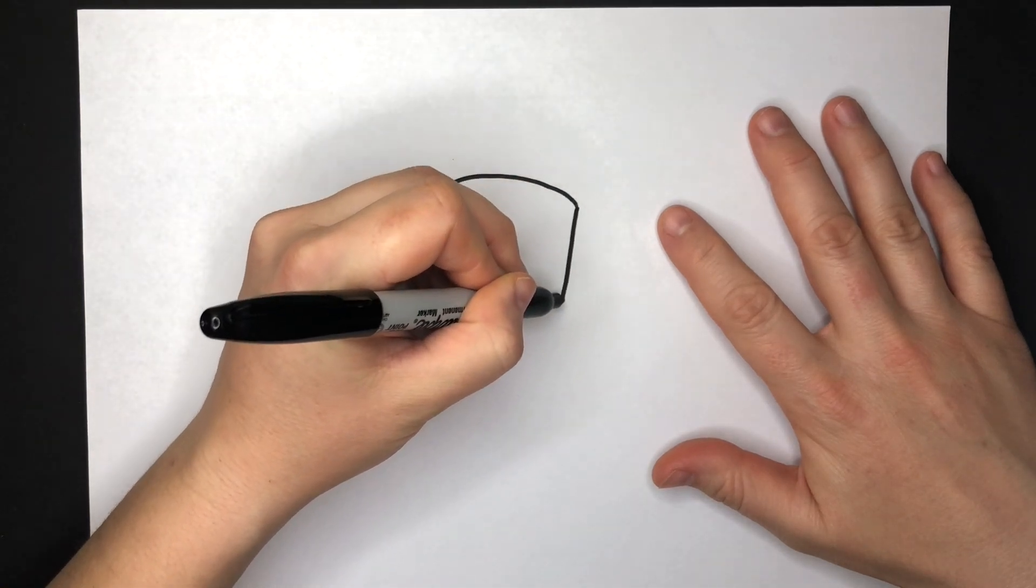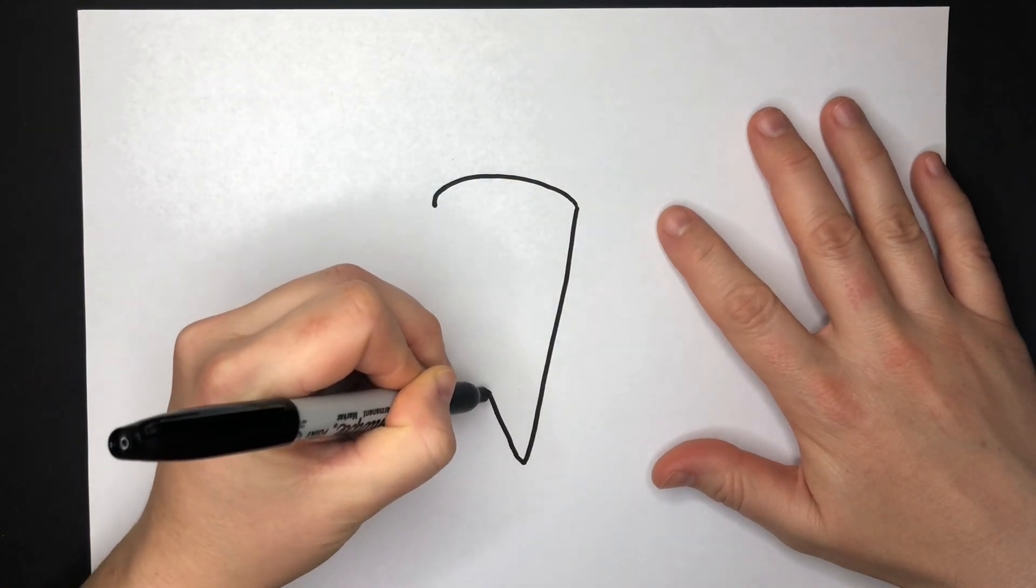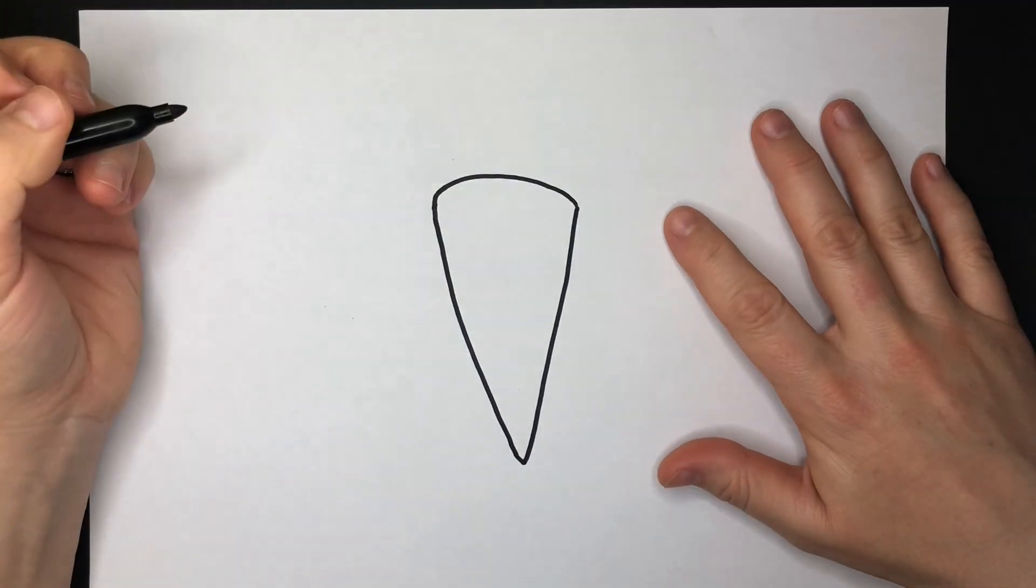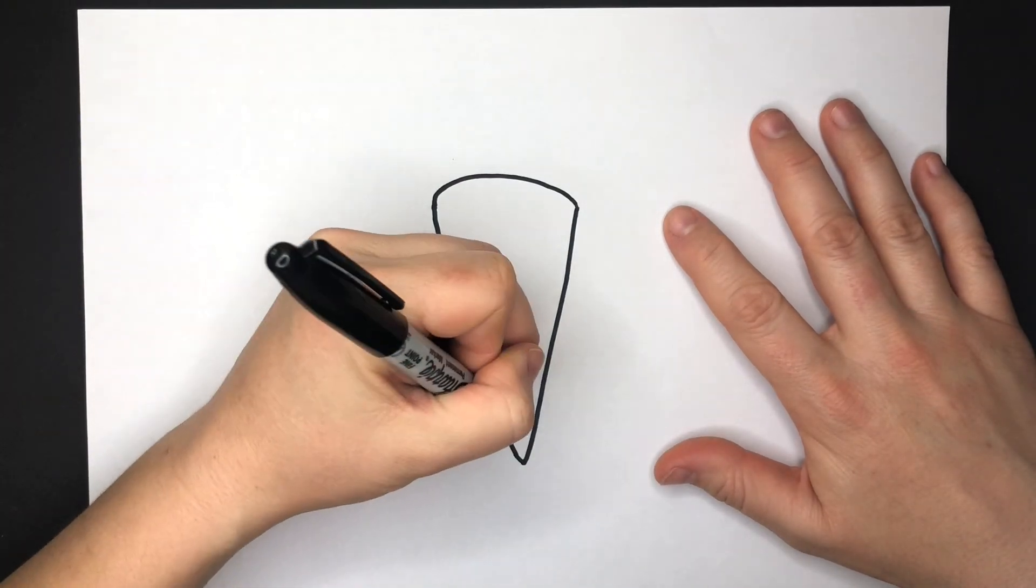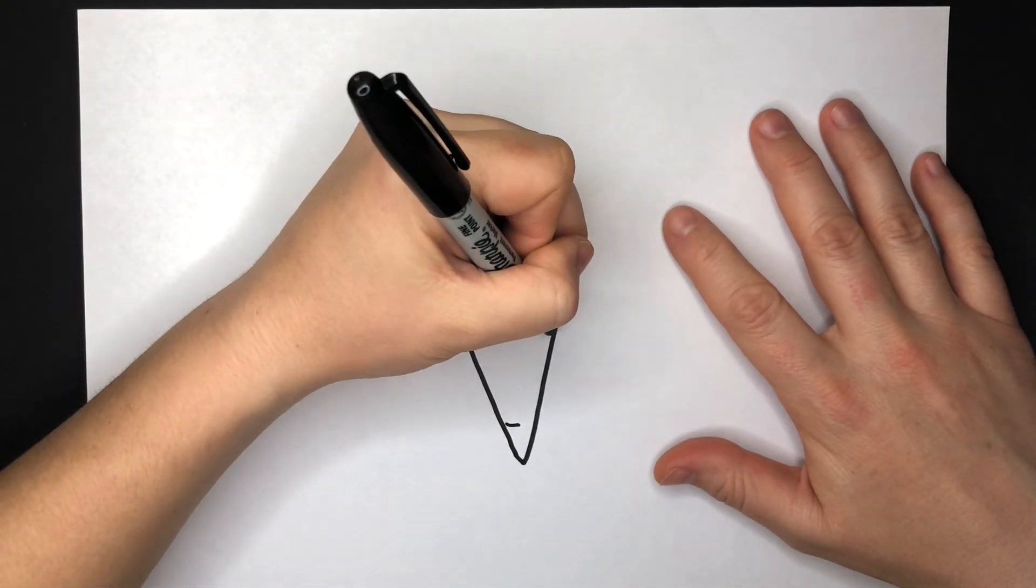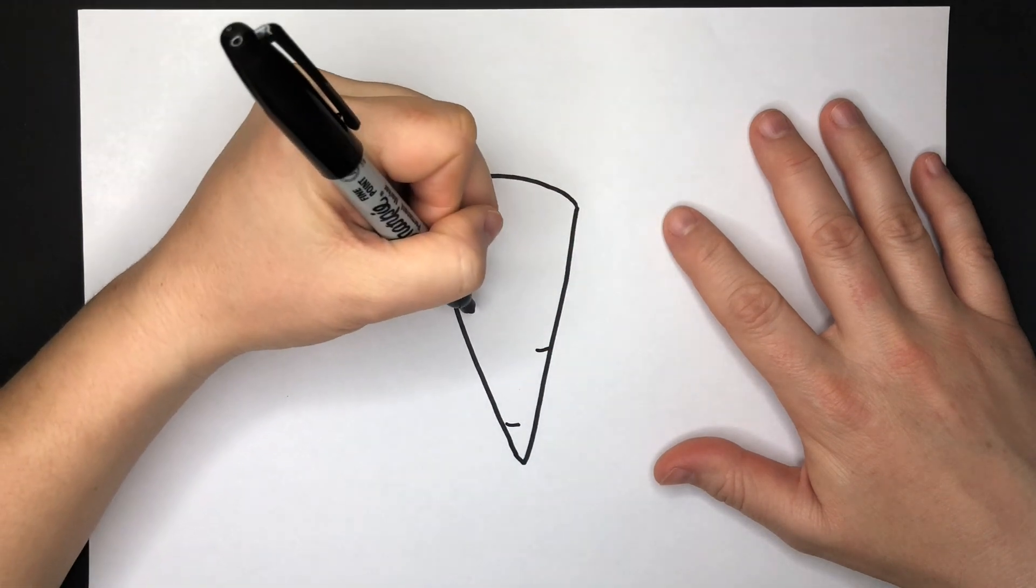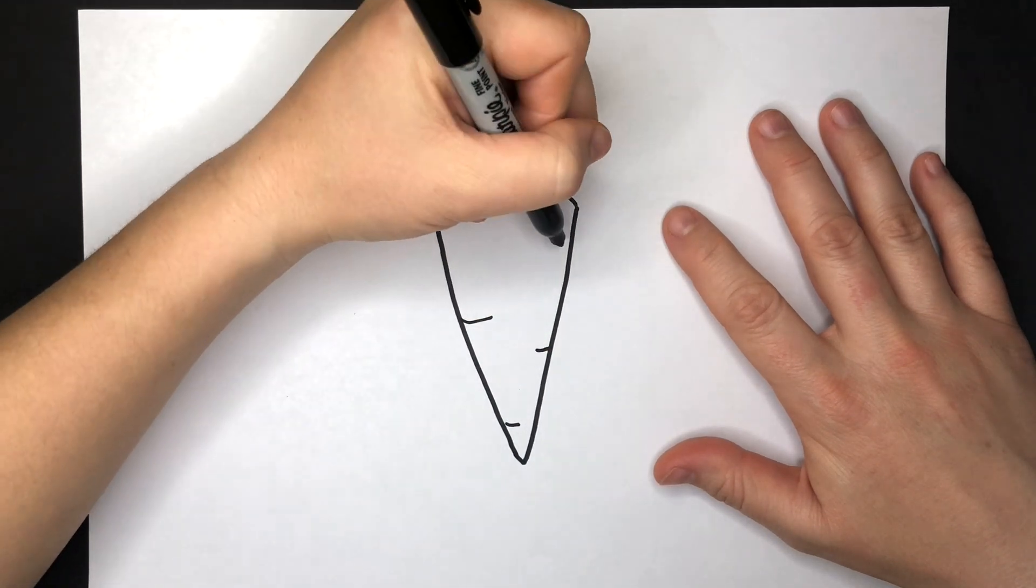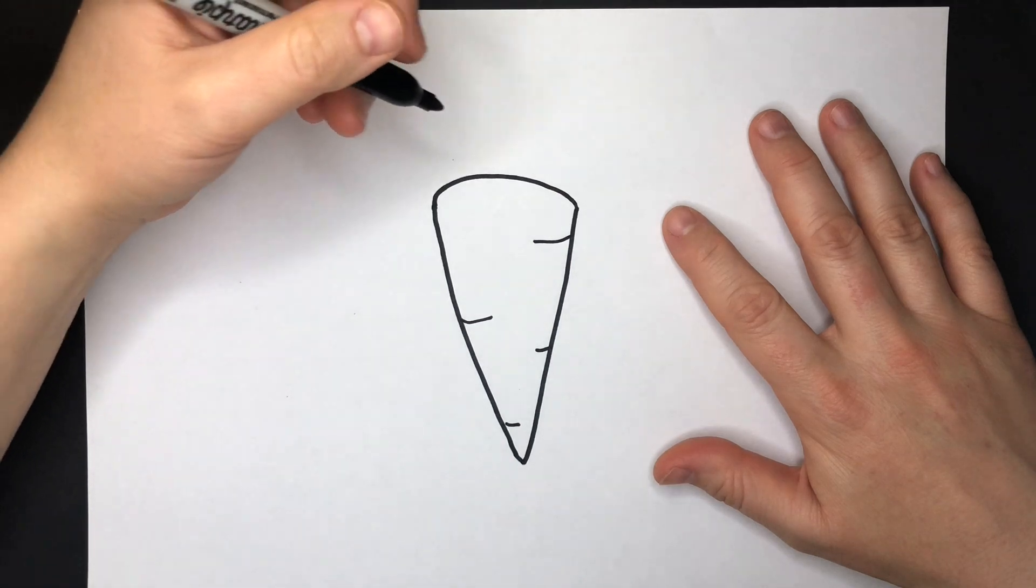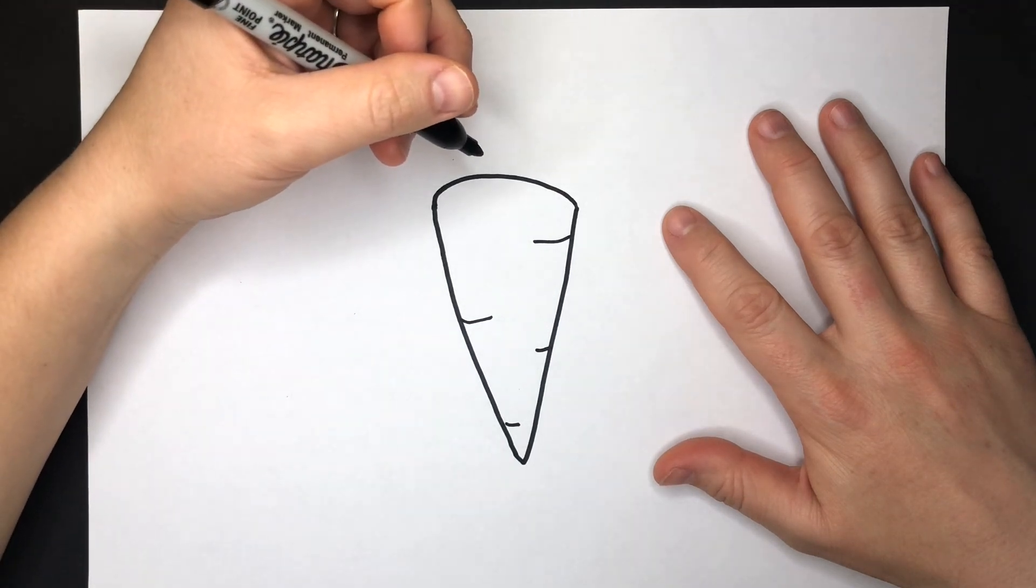You're going to start out with this arc on the top and then connect it with a V. Great job. And now we're just going to add some little carrot lines. You can place yours wherever you want, make it unique for you.